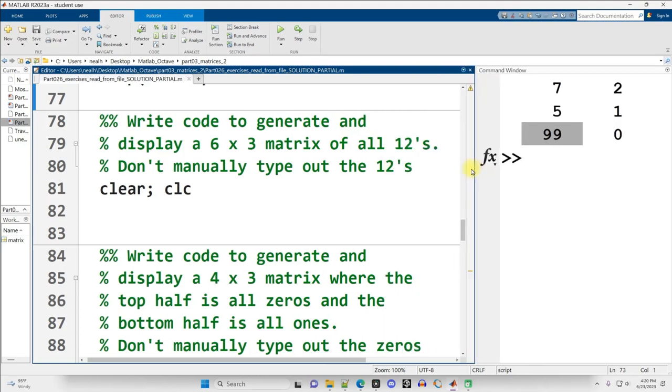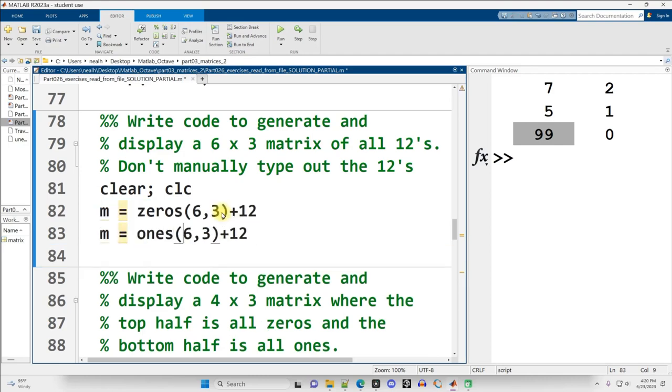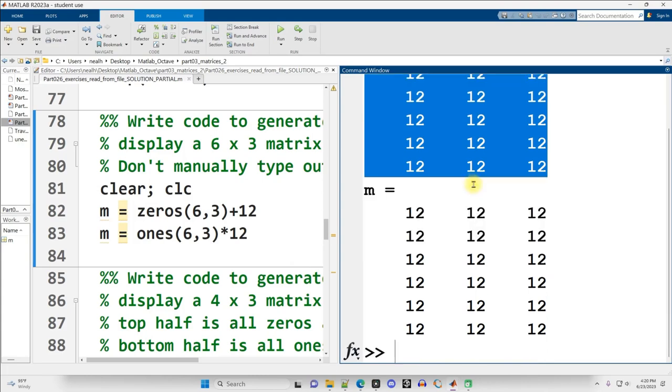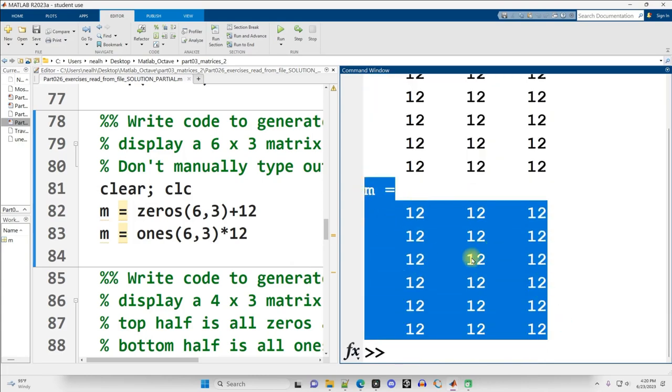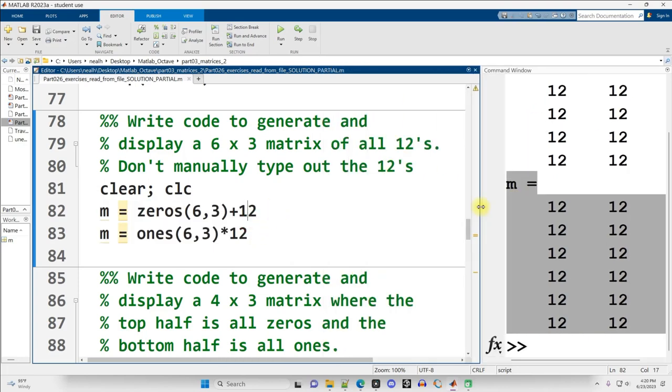Continuing on down. Write code to generate and display a 6 by 3 matrix of all 12s. Don't manually type out the 12s. So what I mean by this is, I want you to create some new matrix using either the zeros function, 6 rows, 3 columns, plus 12, or the ones function, 6 rows, 3 columns, times 12. And there we go. 6 by 3 of all 12s, 6 by 3 of all 12s. I don't want you to type it out. I want you to know how to generate these using some MATLAB functions.